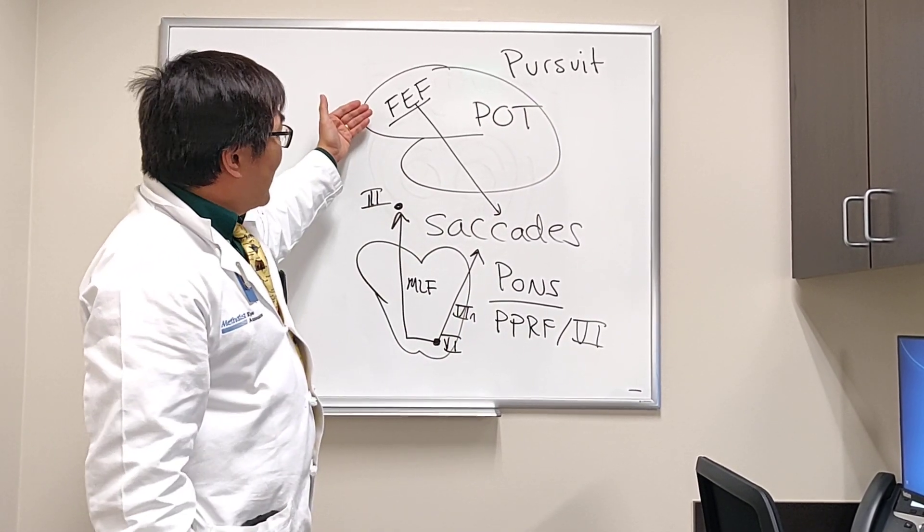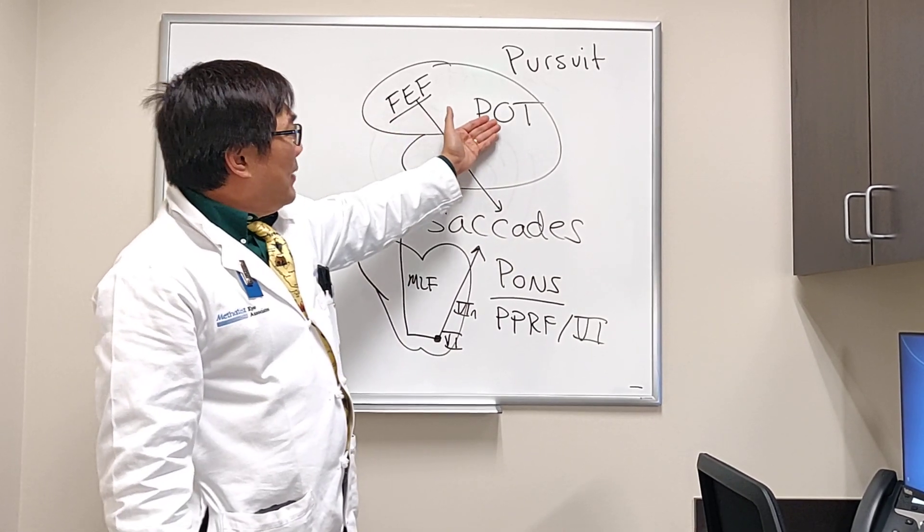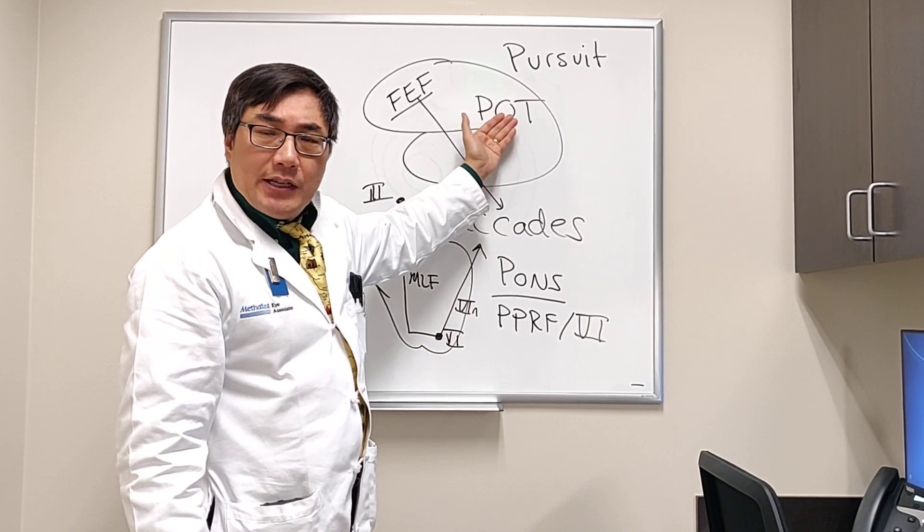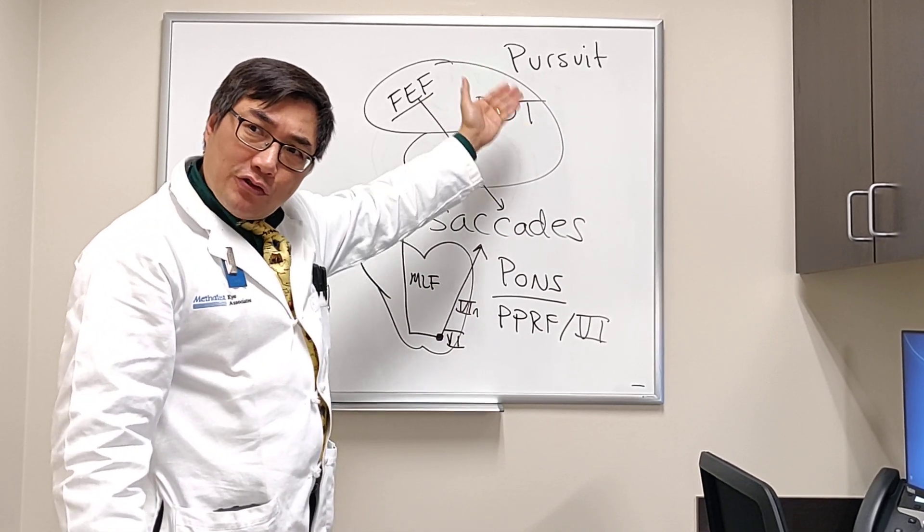And as opposed to the frontal eye field, which is contralaterally generated, the parietal-occipital temporal lobe ipsilateral to the smooth pursuit is the site of origin of the pursuit mechanism.